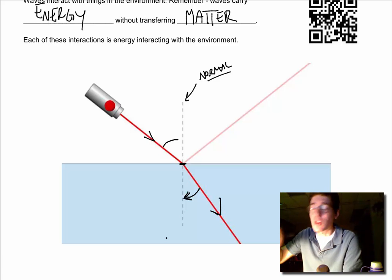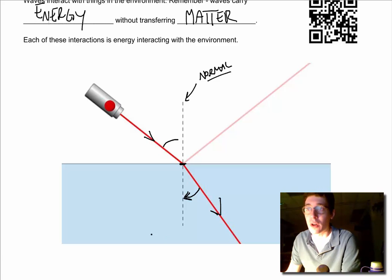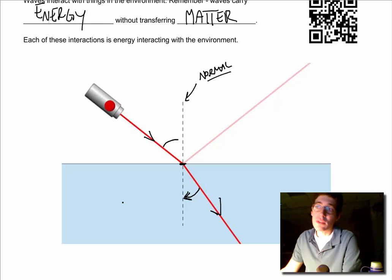So if I go from a low density to a high density substance, I'm going to go toward the normal. If it were flip-flopped, if my light were in the water or the glass trying to shine out, it would actually bend away from the normal. Going from high to low density, I bend away.